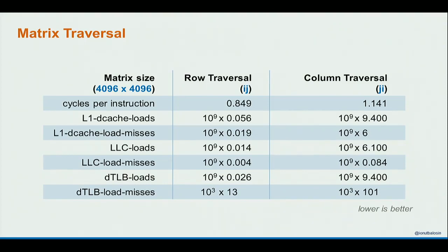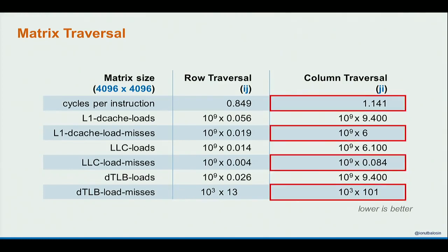I also re-ran the program on Linux with the perf command. Using perf you can profile CPU counters. What I was interested in were cycles per instruction and the number of misses for L1, L3, and the Translation Lookaside Buffer (TLB). All of these counters were worse in the column traversal fashion — that's why it has a negative impact on throughput.